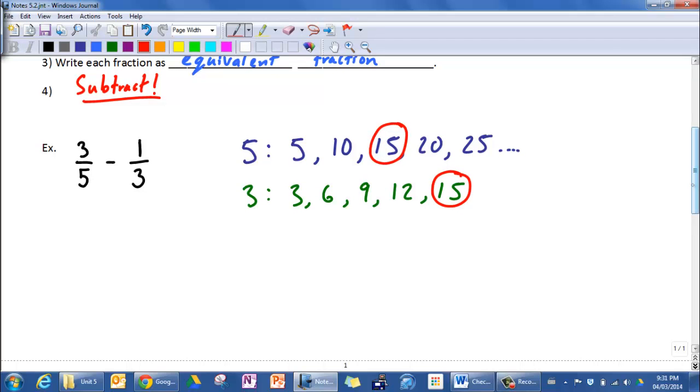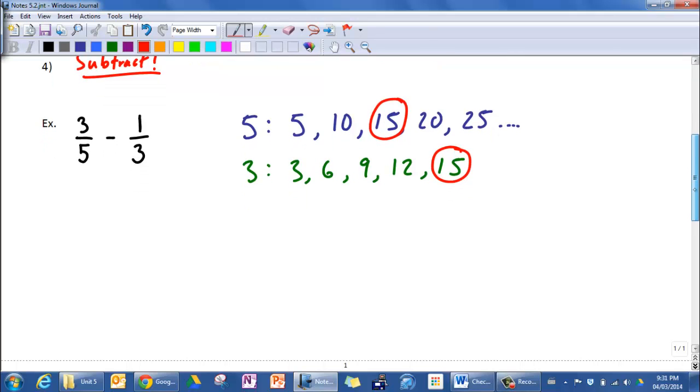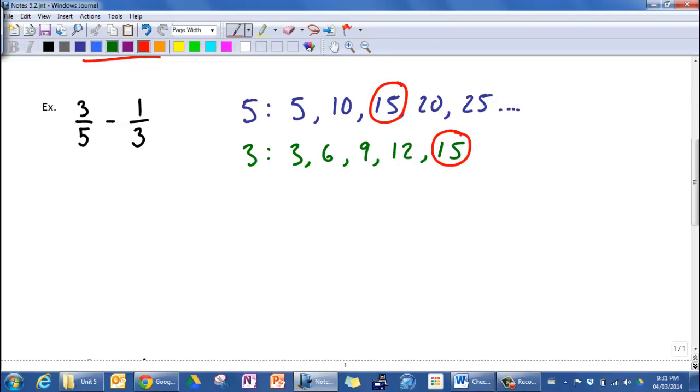So fifteen is going to be my lowest common denominator, so now I need to convert both of these fractions into equivalent fractions so that instead of being over five or over three, they're actually over fifteen. So let's start with three-fifths. Three-fifths, I want that to be something over fifteen. Now you can look at this and say, well, if I multiply this by three, I'll get fifteen, so I have to do the same thing to the top, and what I end up with is three times three is nine over fifteen.